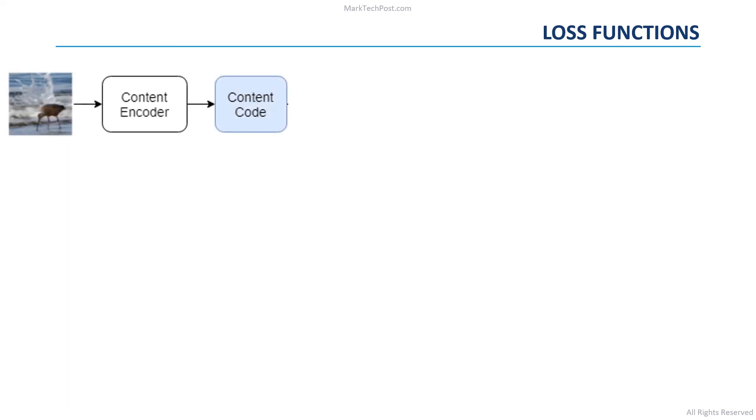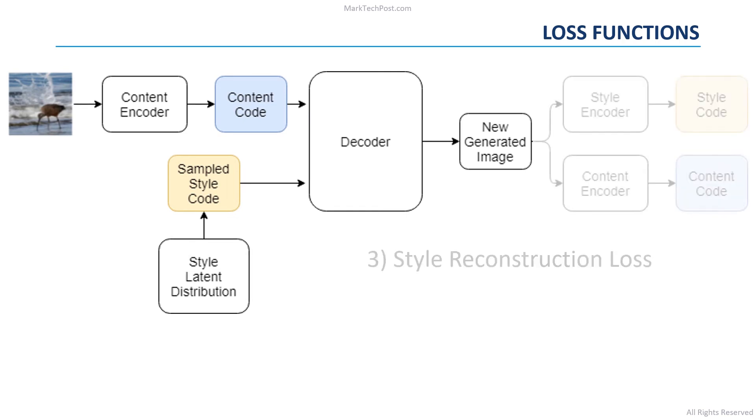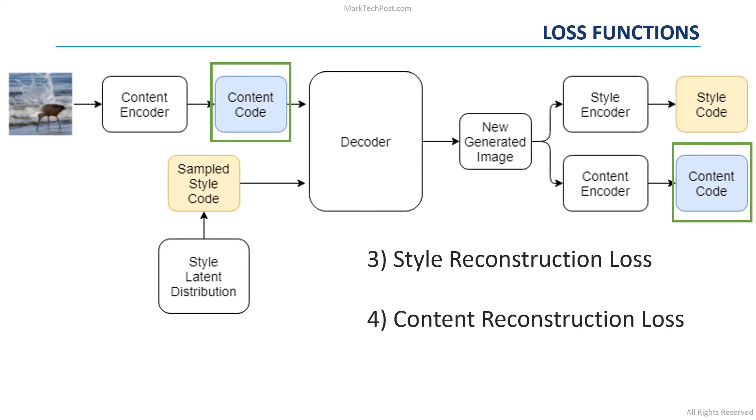Then, given the content code of an image and the style code of an object sampled by the style latent distribution, the decoder can generate a new image. The style reconstruction loss is used to minimize the difference between the style of the object generated by the decoder and the style of the object sampled from the latent distribution. At the same time, the content reconstruction loss is used to minimize the difference between the content generated by the decoder and the one used as input by the decoder itself. Moreover, an adversarial loss function is used to force the images generated by the decoder to be indistinguishable from the real images.